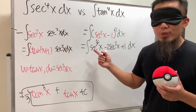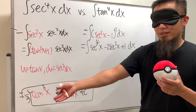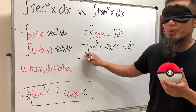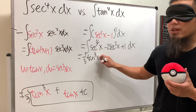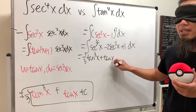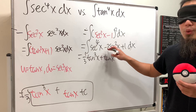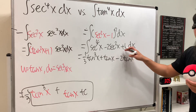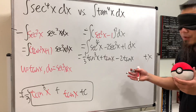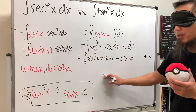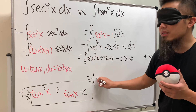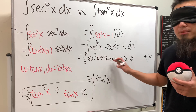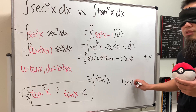Now we integrate term by term. The integral of secant to the fourth x we already know — it's one-third tangent cubed x plus tangent x. Then minus 2 secant squared x integrates to minus 2 tangent x, and the integral of 1 is just x. Combining terms: plus tangent x minus 2 tangent x gives minus tangent x.